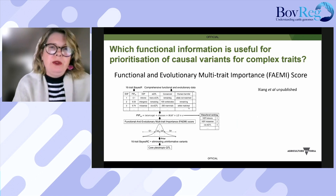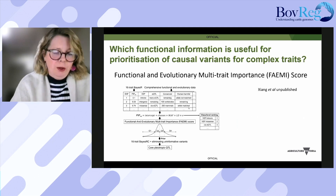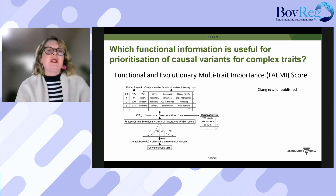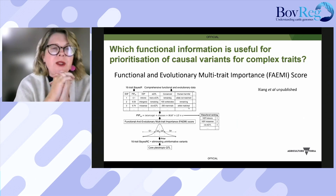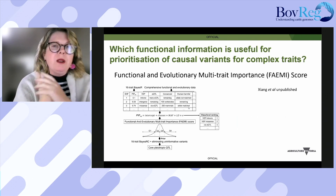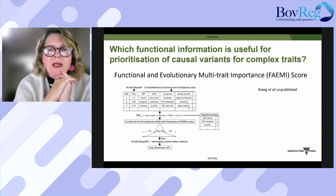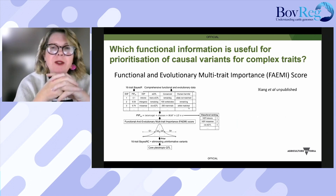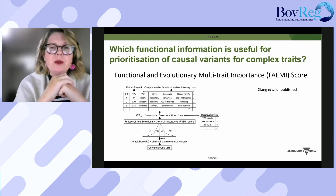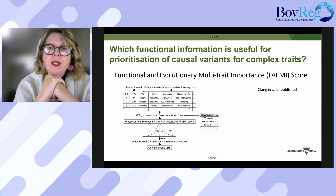Back to our original question: which functional information is useful for the prioritisation of causal variants for complex traits? Radon developed a new score called the Functional and Evolutionary Multi-Trait Importance score — the FAMI score. He's used this score to rank 16 million variants in the bovine genome using phenotypes from 16 dairy traits, with a focus on health and fertility traits from 100,000 cows.